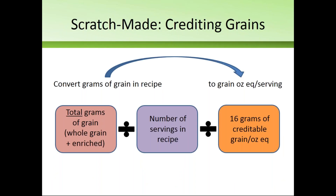For scratch-made items, you take the recipe, convert the grams of grain, divide by the number of servings the recipe makes, and divide again by 16 grams of creditable grain per ounce equivalent — that will tell you how the item credits. Please reach out if you need any assistance crediting your recipes.